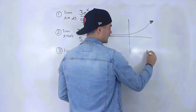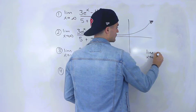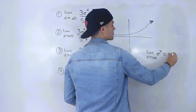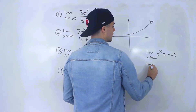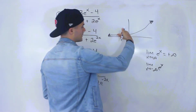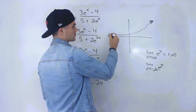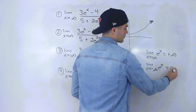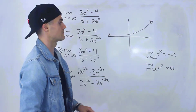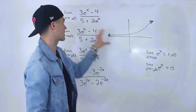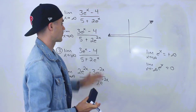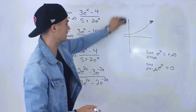Before we get into these limits, I want to note how the graph of e to the x looks. It's a regular exponential function. The limit as x approaches positive infinity of e to the x — the y values approach positive infinity. The limit as x approaches negative infinity of e to the x — the y values approach zero. There's a horizontal asymptote on the left side, and we'll be using these two results throughout.